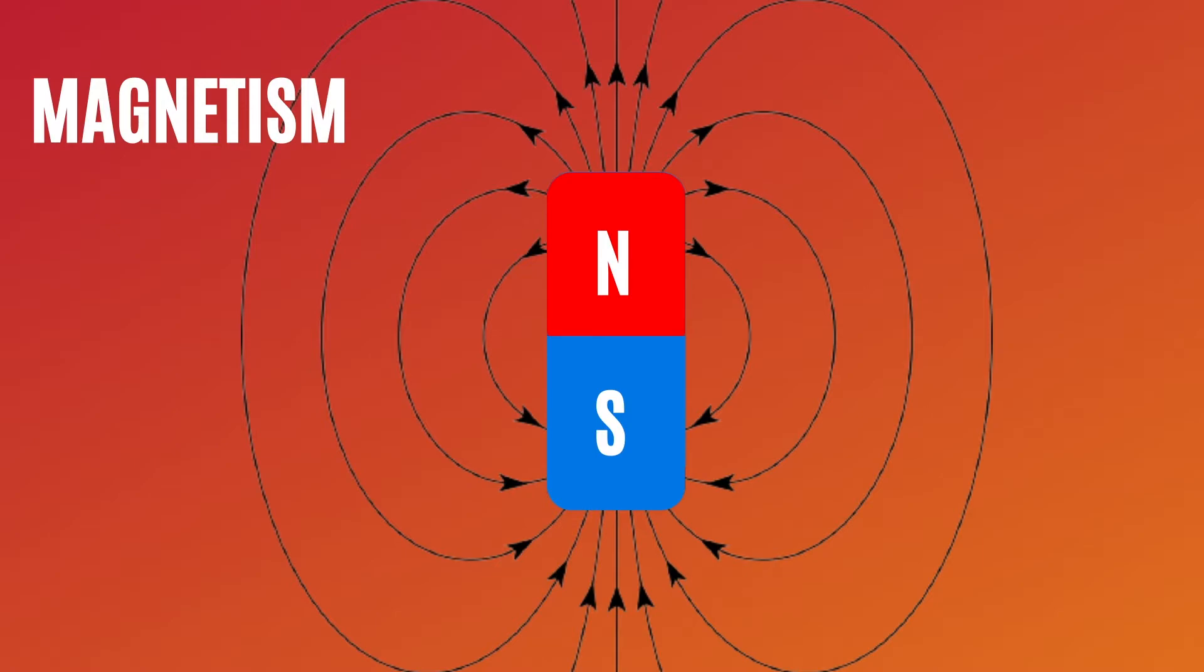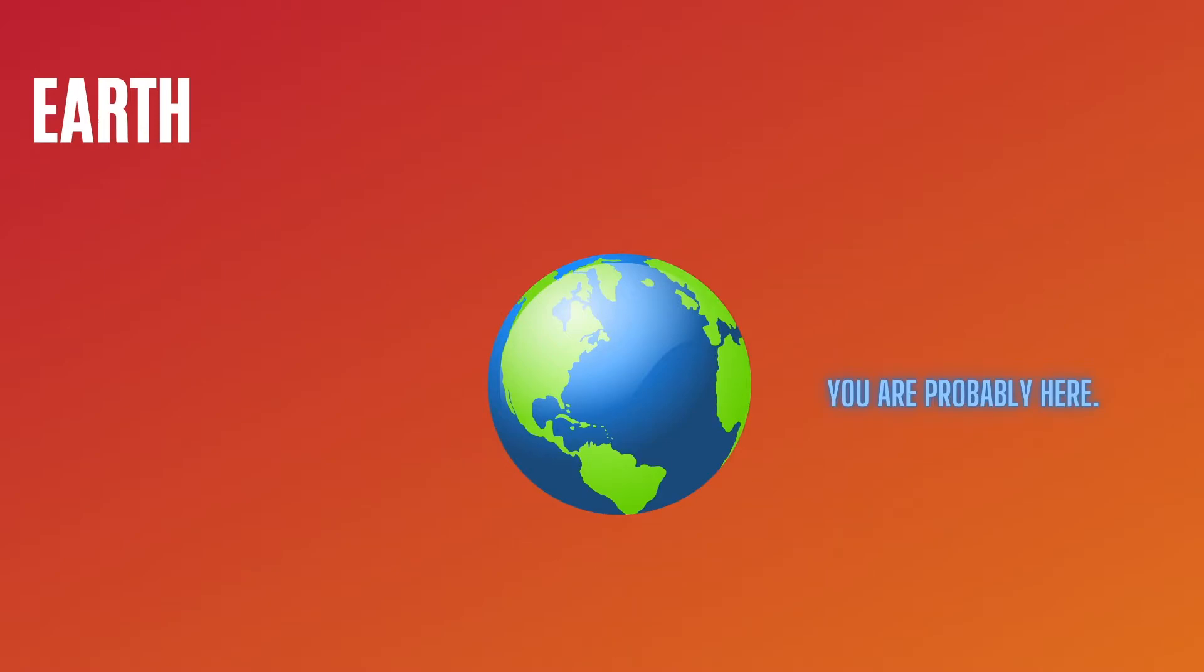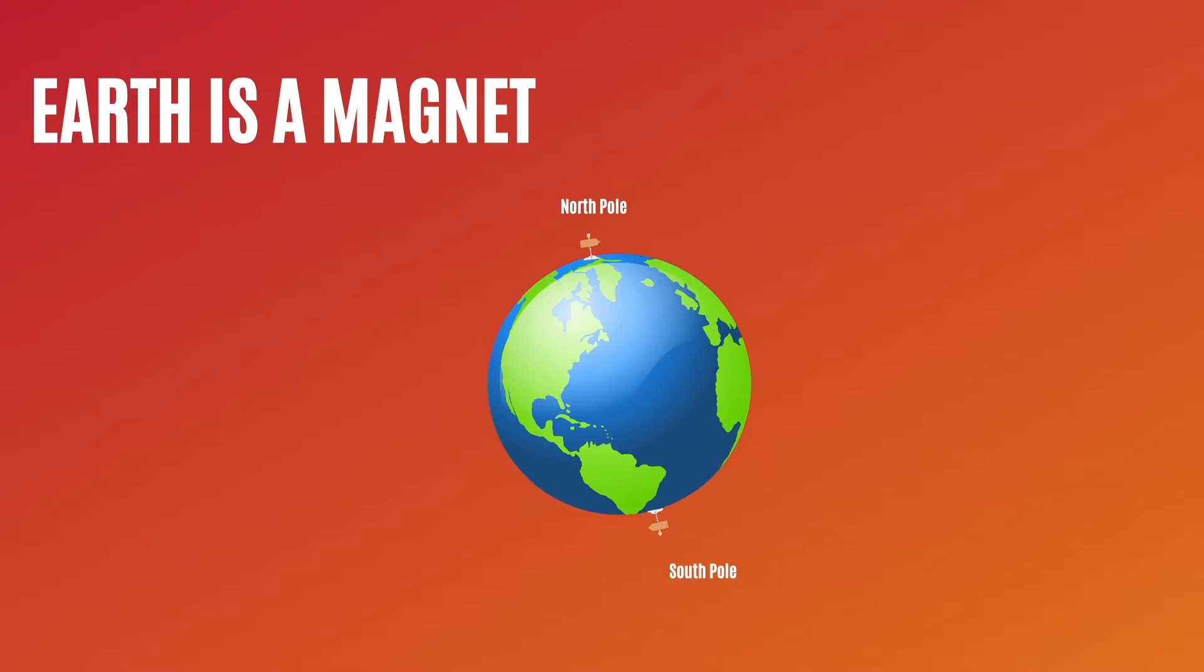What do the names north and south pole come from? Well, they come from this place, Earth. You're probably familiar with it. What you might not know is that Earth is a magnet, with a north and south pole.